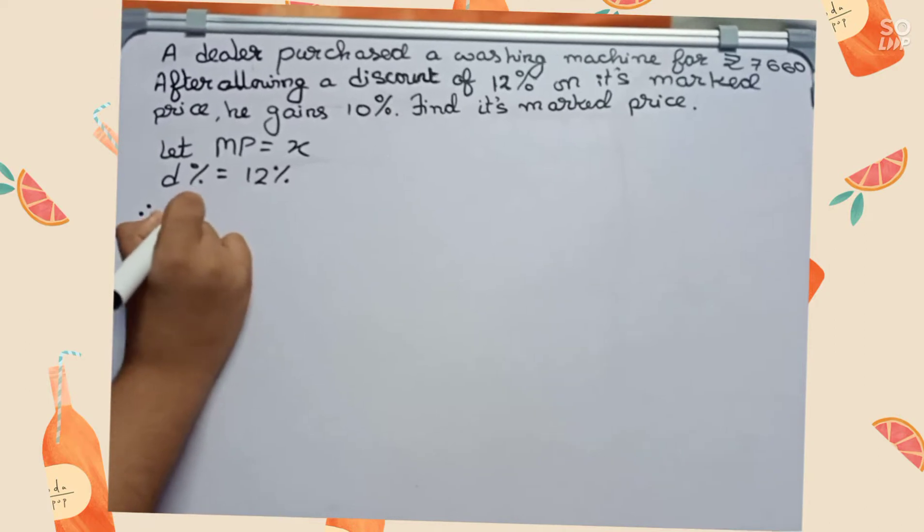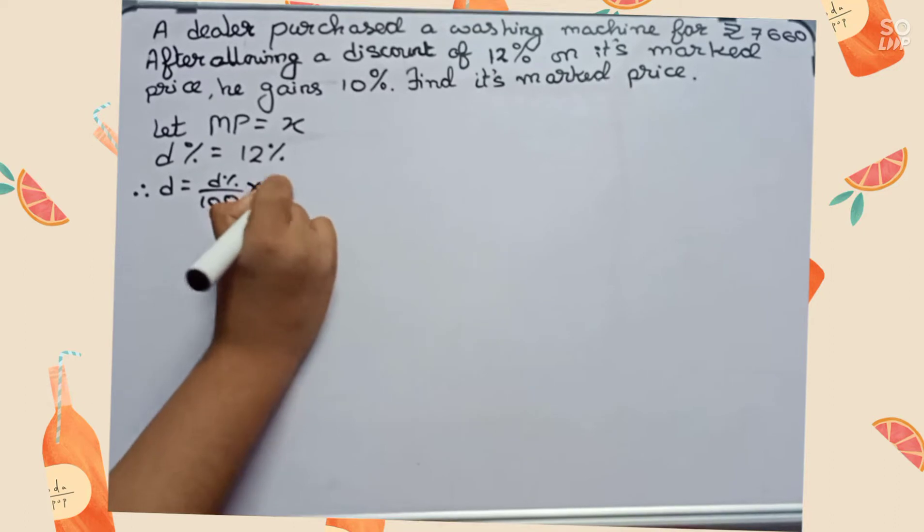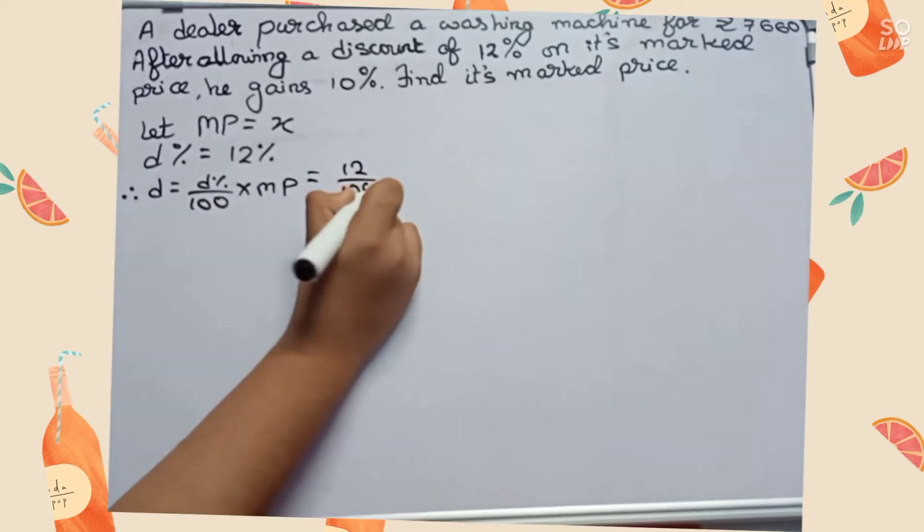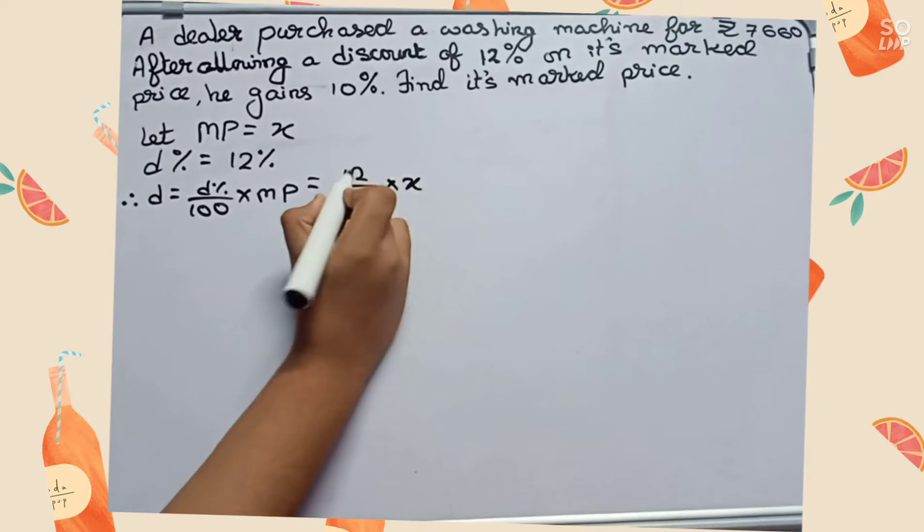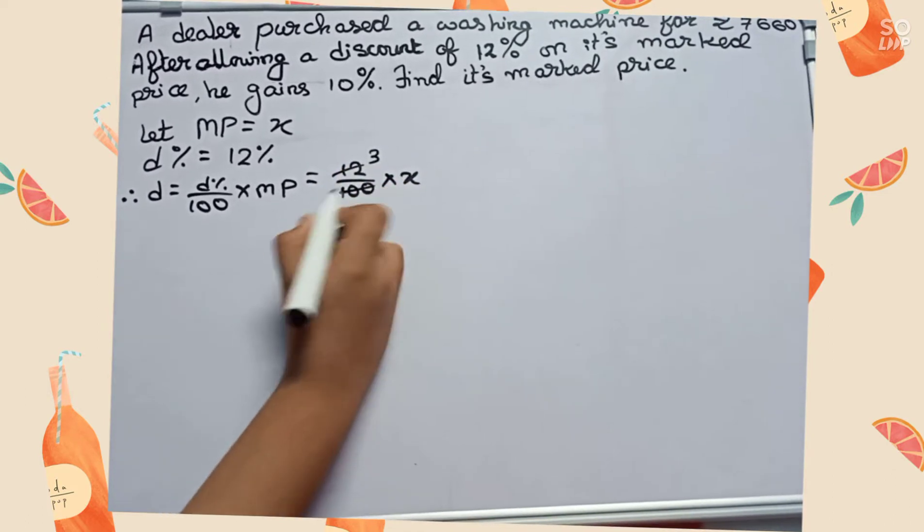Therefore, discount - the formula is discount equals discount by 100 into MP, which equals 12 by 100 into x. We cut 12 and 100 by 4 to become 3 by 25.